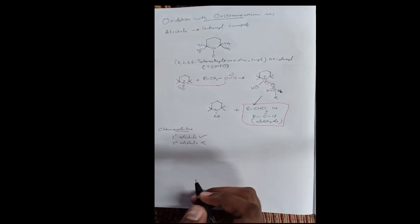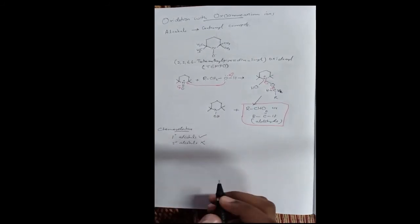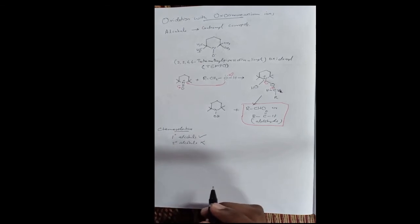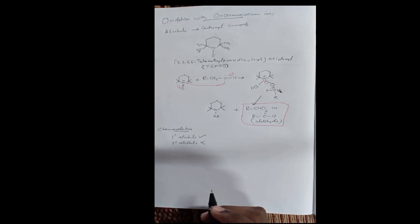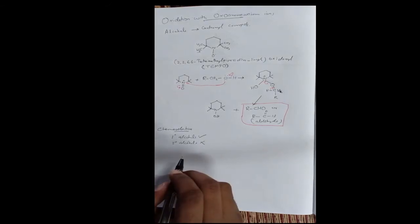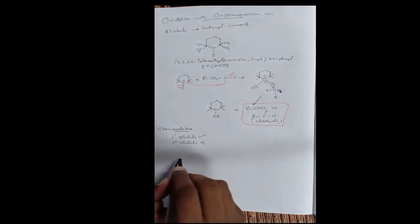TEMPO in combination with sodium hypochlorite (NaOCl) as a co-oxidant can oxidize primary alcohols all the way to carboxylic acids. Let's look at an example.